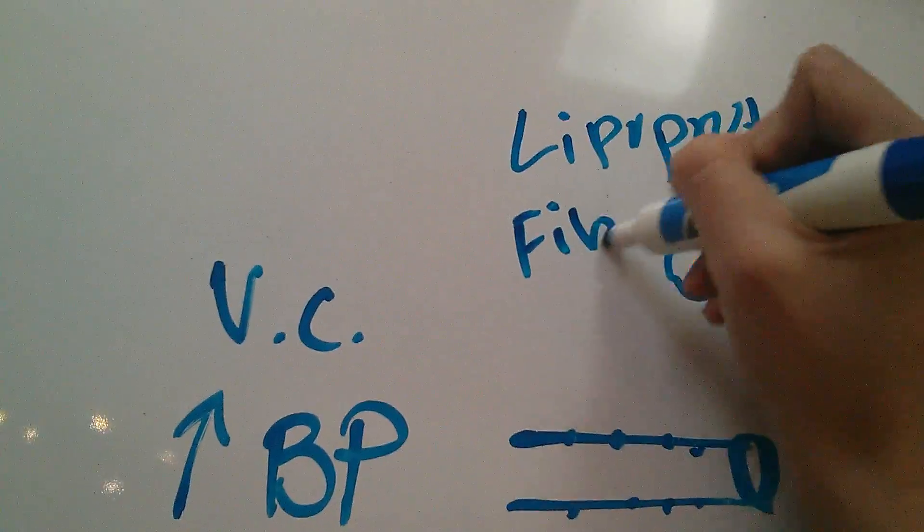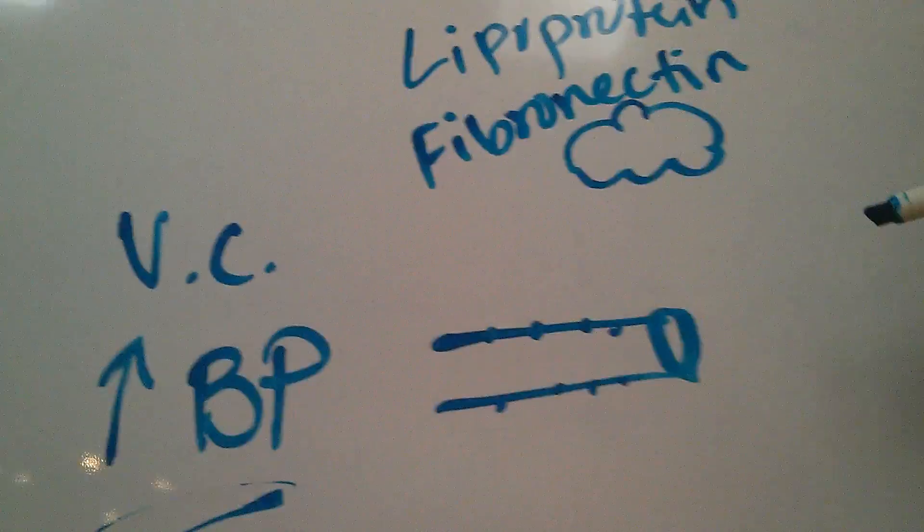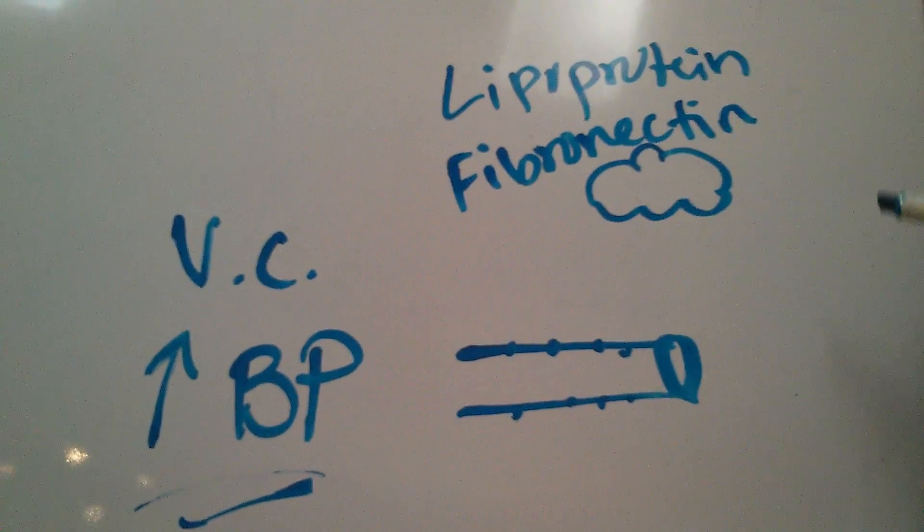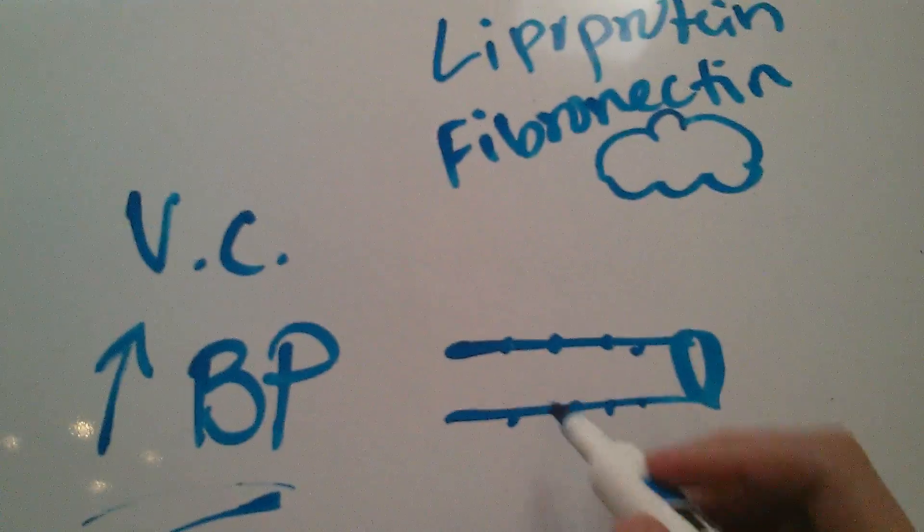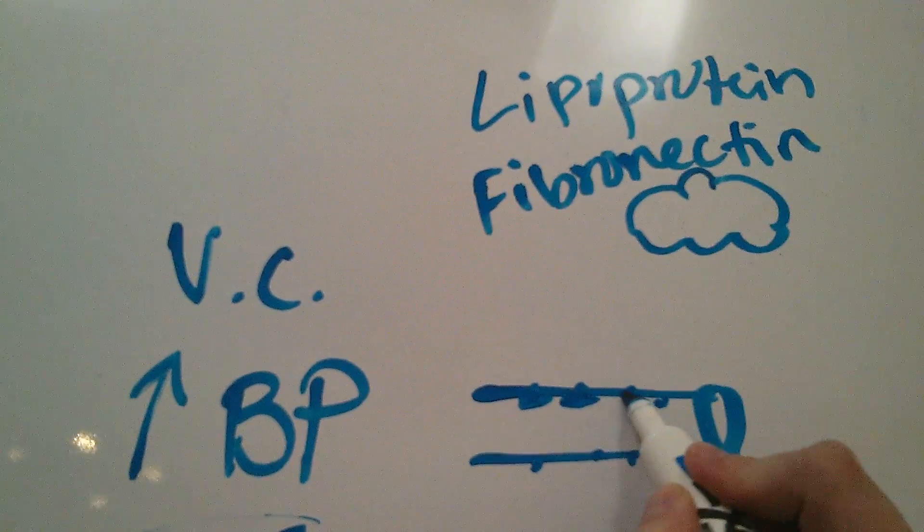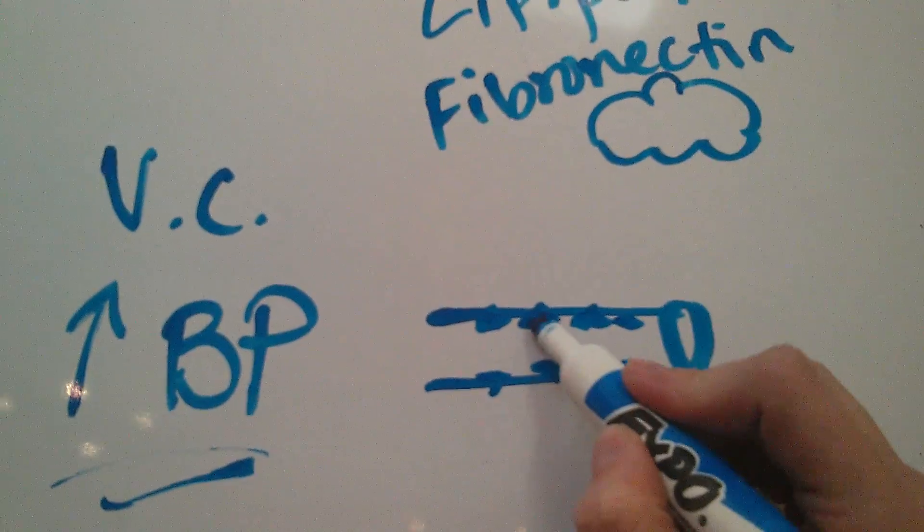Fibronectin is kind of like how the platelets and the fibrin are used to clot off injuries and stuff. So the point of fibronectin is to kind of block off these holes and heal them up, but what ends up happening is that they're not able to do so.